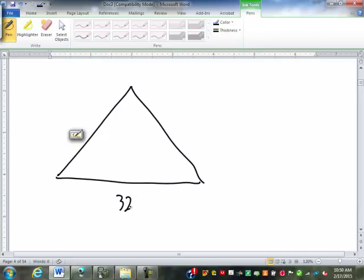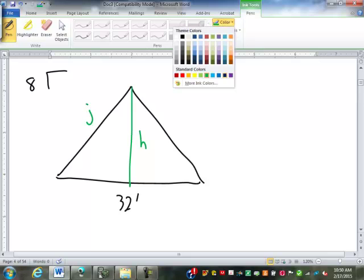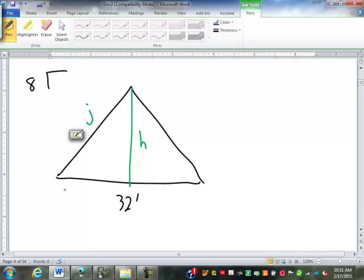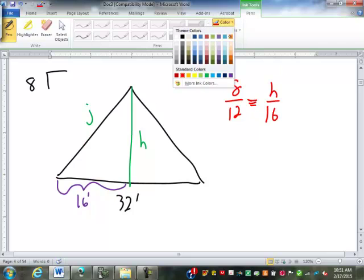Let's say we have a 32 foot span and we'll go 8/12 slope. Let's say we want to know the height and the common rafter length. I used J for the common rafter length there. So the first thing we're going to find of course is the height and we're going to use this run of 16 feet. So we'll use an 8/12 slope equals H over 16. Hopefully you guys are getting pretty good at this calculation by now.